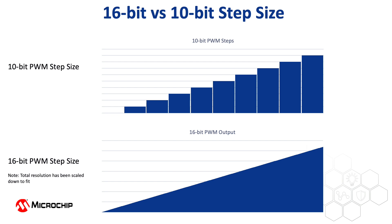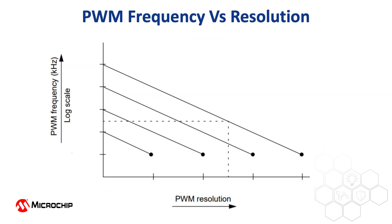You may have noticed I said up to 64 times the resolution. What does that mean? As a PWM peripheral's base frequency is increased, the resolution possible from that PWM peripheral decreases. So it's important to know approximately what frequency you'll be running your PWM peripheral at so that you don't have any unexpected problems with PWM resolution when you are developing your project.